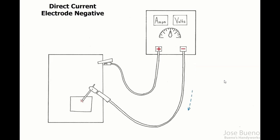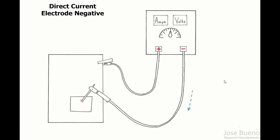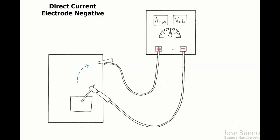So pretty simple and straightforward. This is pretty much it for direct current electrode negative. Just remember that what separates DC EN from DC EP is where our cables are attached to the machine, and the heat distribution of the welding arc - two-thirds of the heat are focused on the base metal and one-third on the electrode. Thank you for watching.